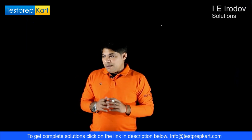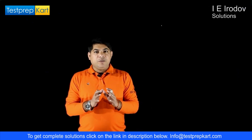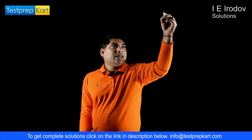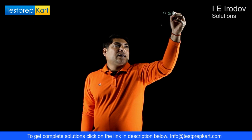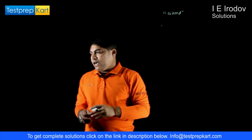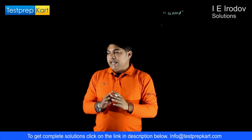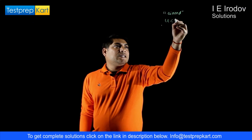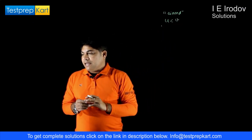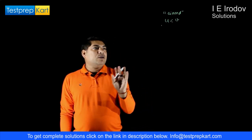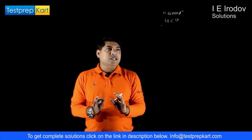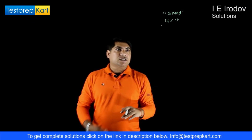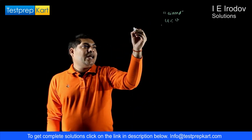In this problem, a point A moves uniformly with velocity v such that its velocity vector is always aimed towards a point B. Point B moves linearly with velocity u, where u is less than v. At the initial moment, v is perpendicular to u, and the initial separation between the two points is l. We need to find how soon the two points will converge.